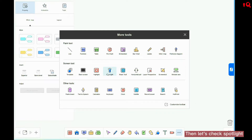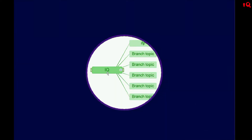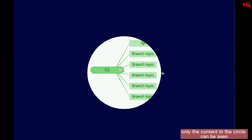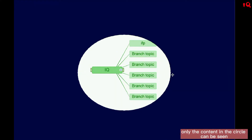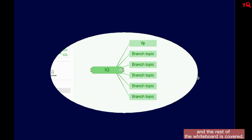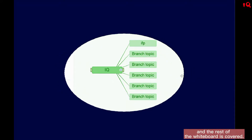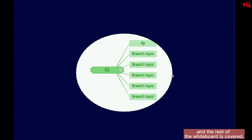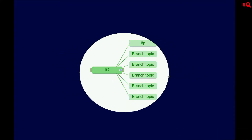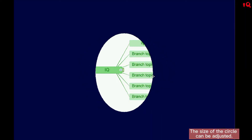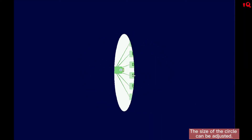Let's check Spotlight. You can see that only the content in the circle can be seen, and the rest of the whiteboard is covered. The size of the circle can be adjusted.